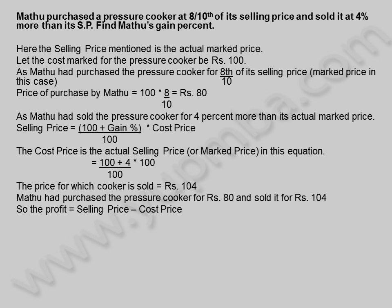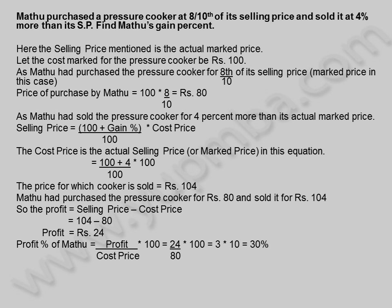Muthu had purchased the pressure cooker for 80 rupees and sold it for 104 rupees. So the profit is equal to selling price minus cost price, which is 104 minus 80. Profit is equal to 24 rupees. Profit percentage of Muthu is equal to profit divided by cost price into 100, which is 24 by 80 into 100, equal to 3 into 10, equal to 30 percentage. Profit percentage earned by Muthu is 30 percentage.